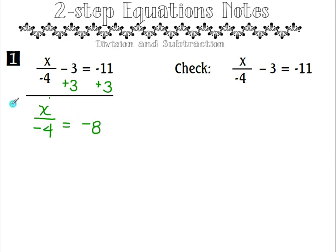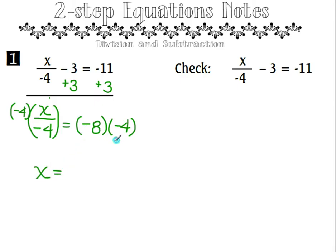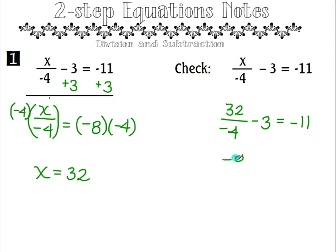To undo this division of negative 4, we are going to multiply by negative 4. We are left with x equals negative 8 times negative 4, which is positive 32. When we plug this value back in: 32 divided by negative 4 minus 3 equals negative 11. 32 divided by negative 4 is negative 8, and negative 8 minus 3 is negative 11. So negative 11 equals negative 11 — our value of x equals 32 is confirmed.